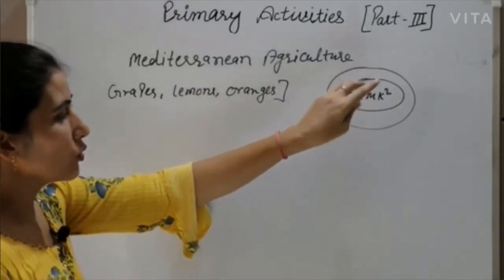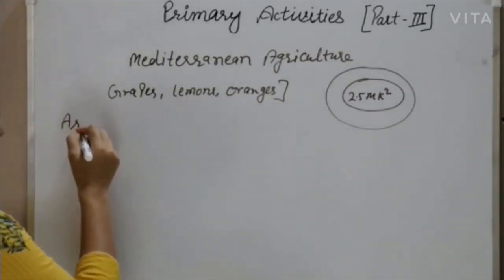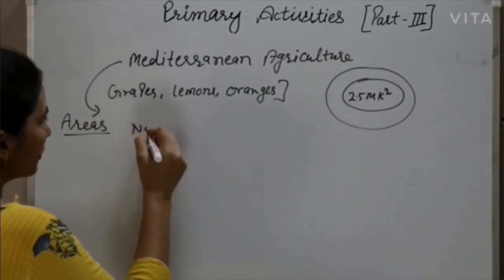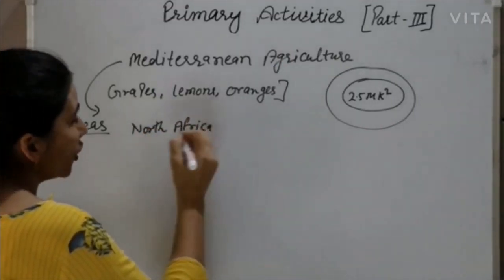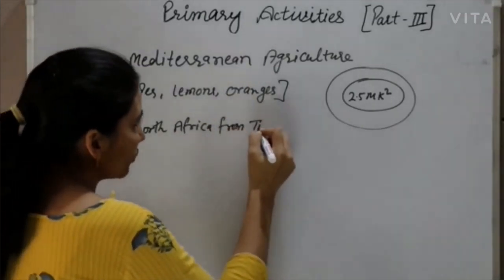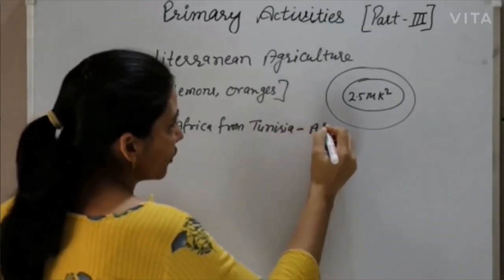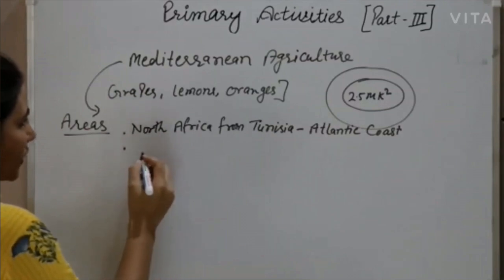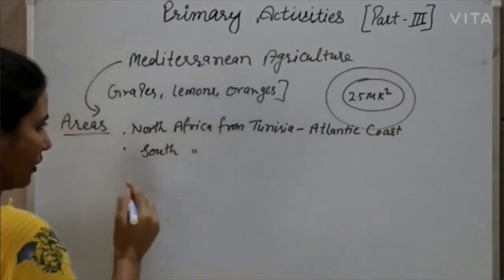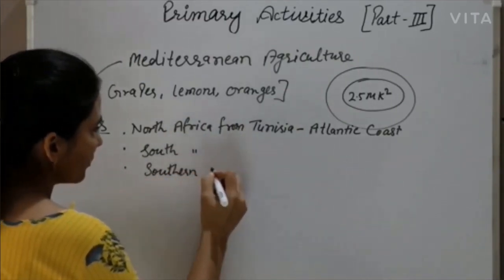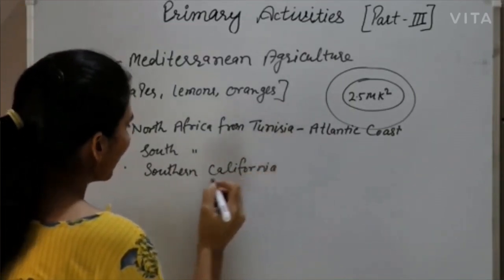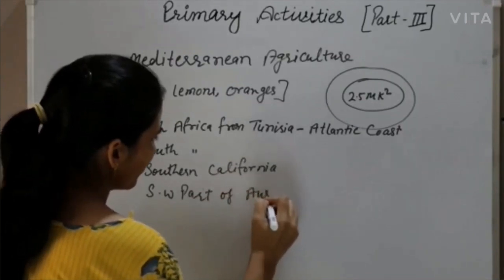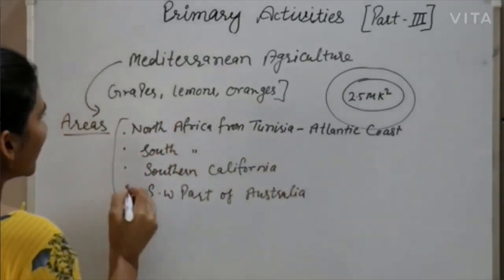The areas of Mediterranean agriculture are those countries surrounding the Mediterranean Sea. These include North Africa from Tunisia to the Atlantic coast, South Africa, Southern California, and the southwestern part of Australia.